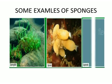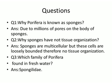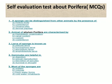Some examples of sponges are shown in this figure: Spongilla, Sycon, Euplectella. Questions: Why is Porifera known as sponges? Answer: Due to millions of pores on the body of sponges, they are known as sponges. Why do sponges have no tissue organization? Because sponges are multicellular but cells are loosely bound, therefore no tissue organization. Which family of Porifera is found in fresh water? Answer: Family Spongillidae; example is Spongilla. Self-evaluation test about Phylum Porifera in MCQ form — students should solve these questions.